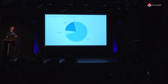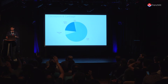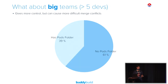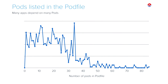How many people check in the Pods folder in the repository? Okay, most people do — more than half. But if we look at bigger teams, this number decreases — teams with more than five developers actually choose to ignore the Pods folder. It gives you more control but it can cause more difficult merge conflicts, so it's really up to you. CocoaPods makes it really easy to add dependencies, and most teams have fewer than 30 pods, but we've seen Podfiles with 80 dependencies.